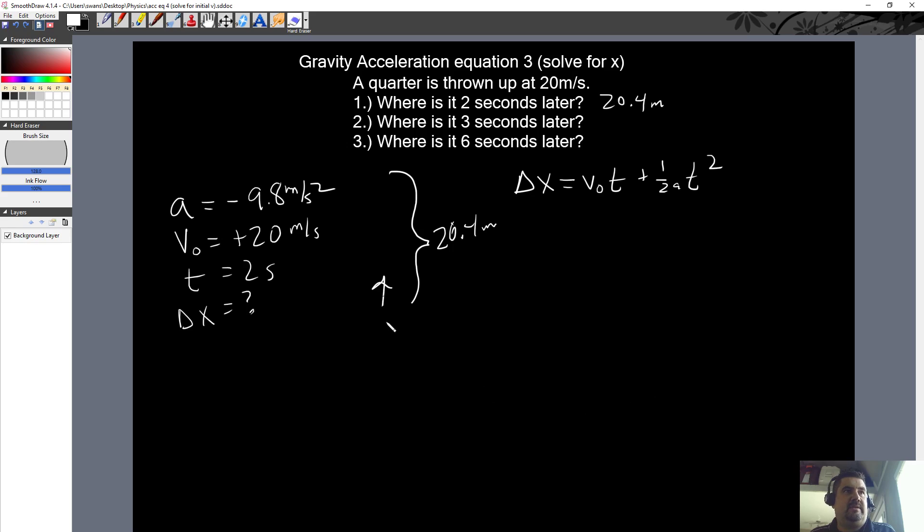I'm just going to erase this part. We can redo this. Then let's go. Delta X is equal to still 20 meters per second. But now we're talking three seconds later for the second part, right? Plus 1 half A, negative 9.8 times 3 squared.